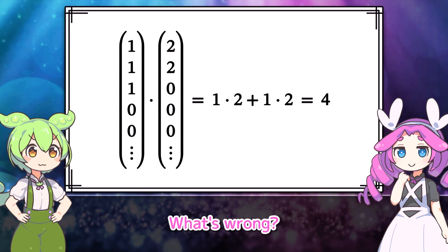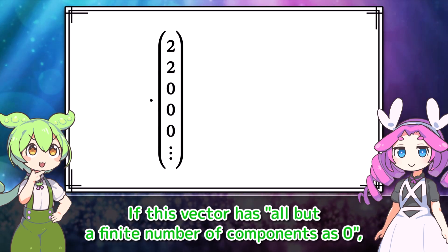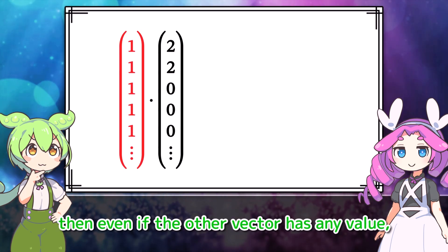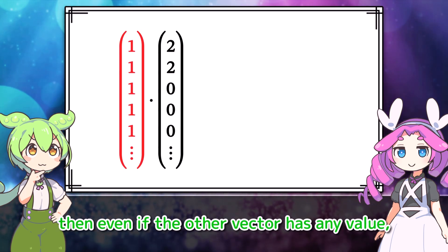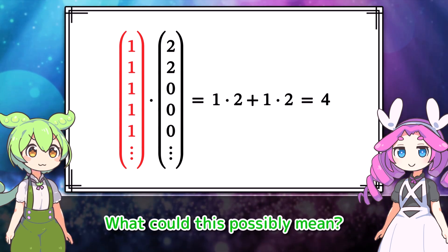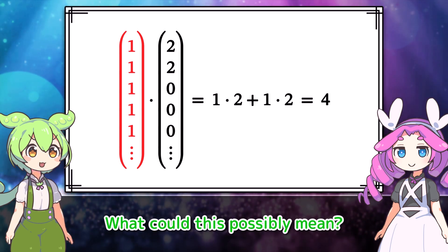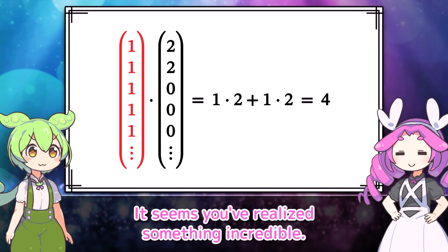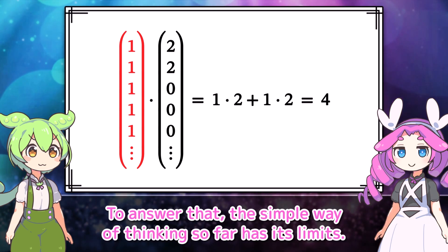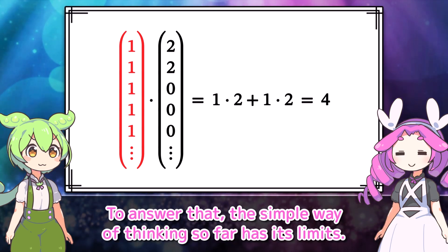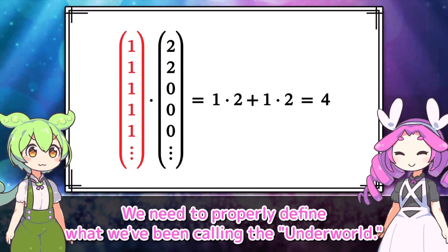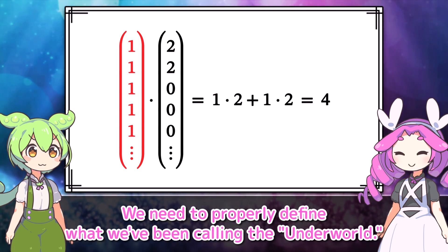Great, problem solved. It feels like the space has gotten much narrower, but you can have a hundred or even a thousand non-zero components — this is a space broader than any finite-dimensional space. But wait — if this vector has all but a finite number of components as zero, then even if the other vector has any value, the dot product can still be calculated as a finite value. What could this possibly mean?